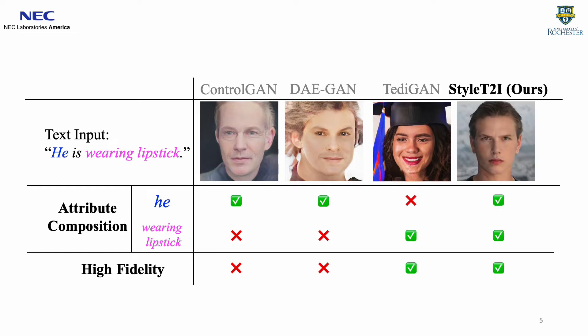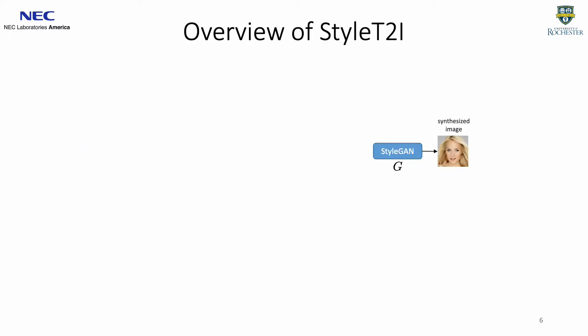To this end, we propose Style T2I, a novel text-to-image framework that generates high-fidelity images with strong compositionality. Here is an overview of our Style T2I framework. We leverage a pre-trained StyleGAN for synthesizing high-fidelity images. We focus on finding a text-conditioned latent code Zs in the generator's latent space that can be decoded into an image aligned with the input text.